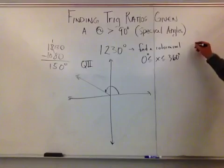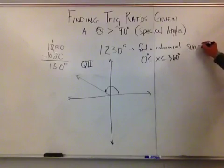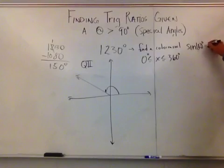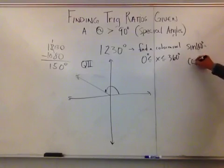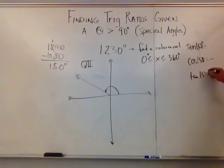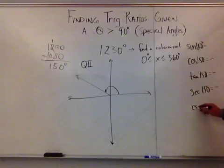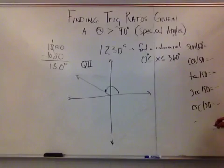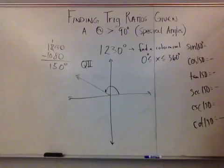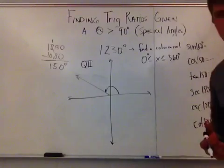Step one: draw a picture. Step two: identify the quadrant — quadrant 2. Step three: assign signs. Sine of 150 is positive, cosine of 150 is negative, tangent of 150 is negative, secant of 150 is negative, cosecant of 150 is positive, and cotangent of 150 is negative.